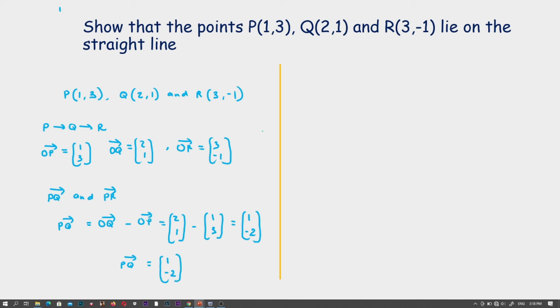Also, let's calculate our second vector, that is vector PR. PR will be the second point, that is OR, minus vector OP.